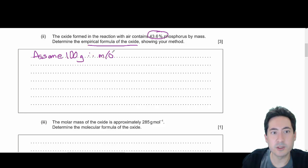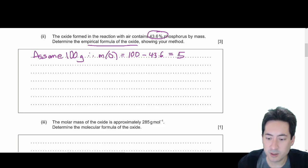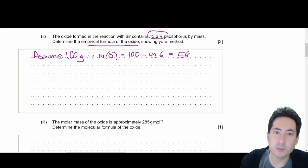And therefore, the mass of oxygen, there'll be 43.6 grams of phosphorus, and so minus that will give you 56.4. If you plug that into a calculator, you'll get 56.4 grams of oxygen.